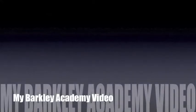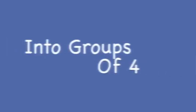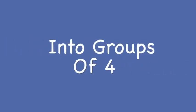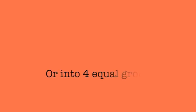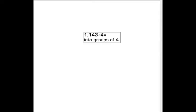There are two ways to think about the question 1,143 divided by 4: into groups of 4, or into 4 equal groups. I chose to split it into groups of 4. This way is easier for me.